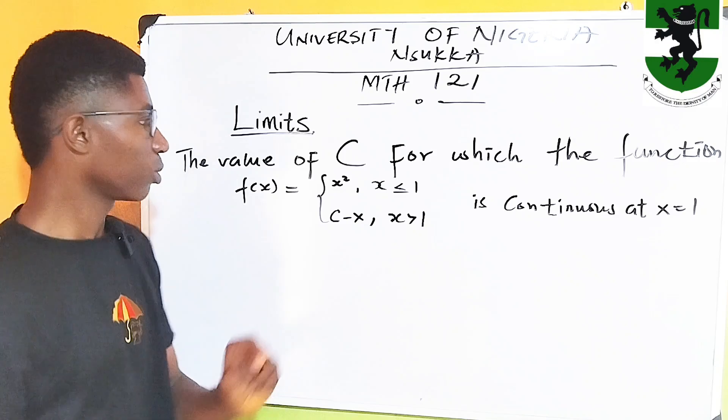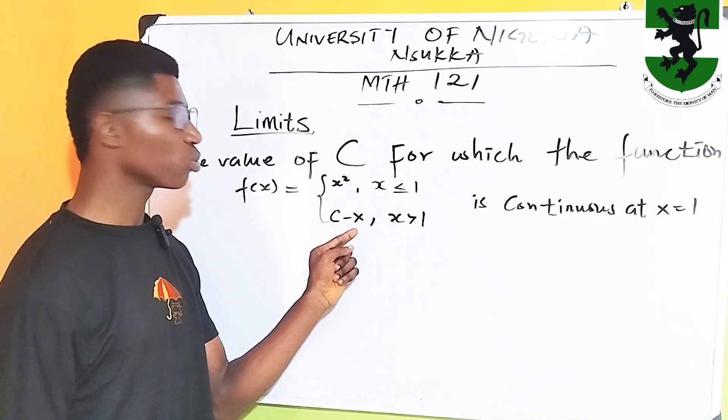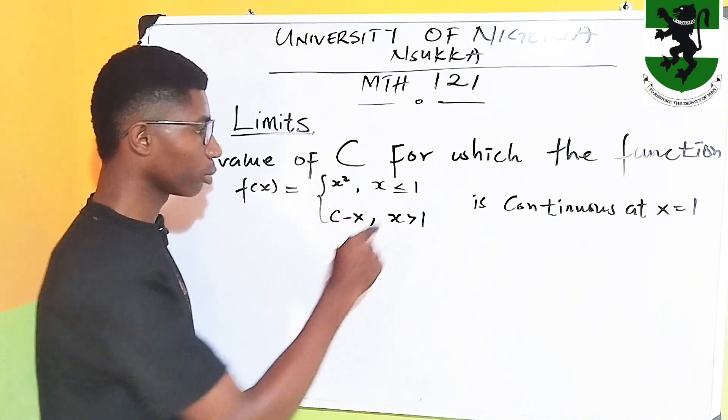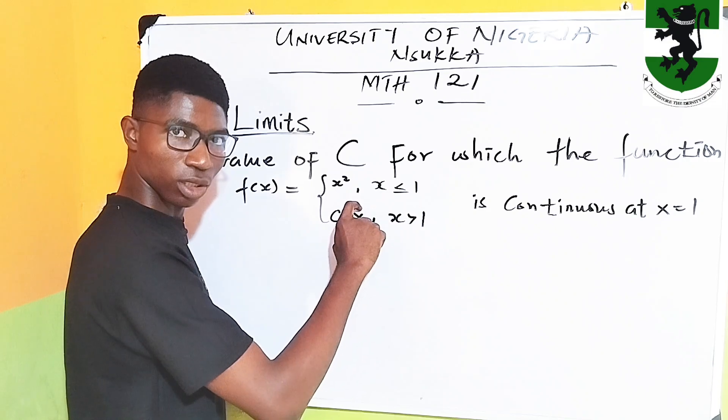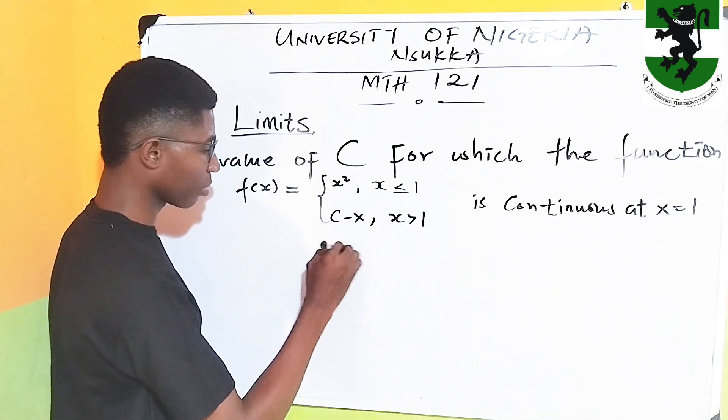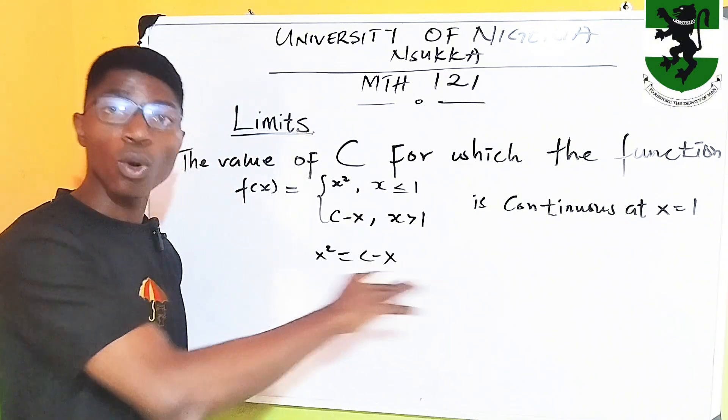Now, it means that the limit at this point must be equal to the limit at this point, right? And that is, substitute 1 into this expression and equate it to this expression. That is, x squared must be equal to c minus 1 times x. This is the condition for continuity.